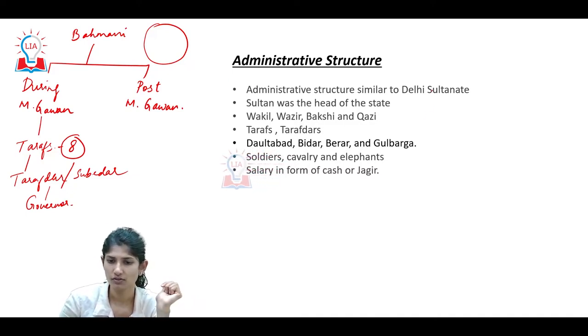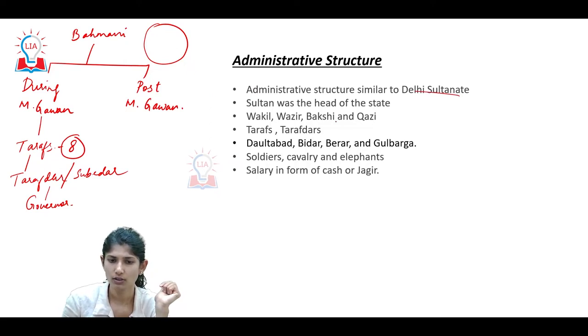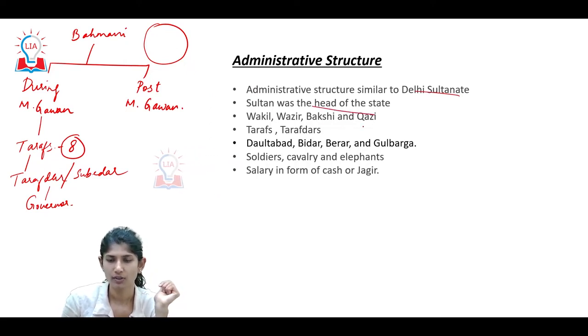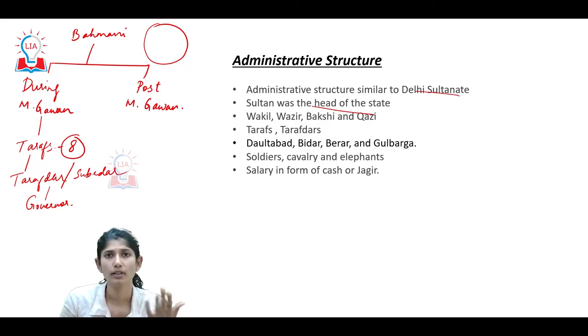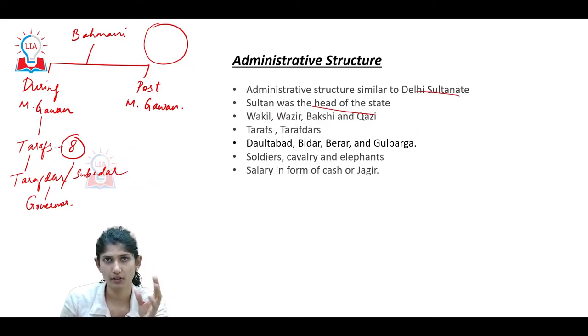The administrative structure was similar to the Delhi Sultanate. The Sultan was the head of state. Below him were ministers: the Wakil, Wazir, Bakshi, and Kazi - each dealing with specific portfolios. We will see further ahead who handled which position.